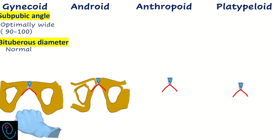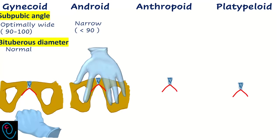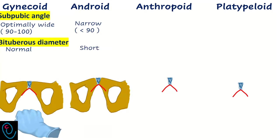In android pelvis, the sub-pubic angle is narrow, less than 90 degrees, which roughly corresponds to the abducted index and middle fingers. This reduces the available space, pushes the head backward, and increases the risk of perineal injuries. The bituberous diameter is short, making delivery at the pelvic outlet more difficult.